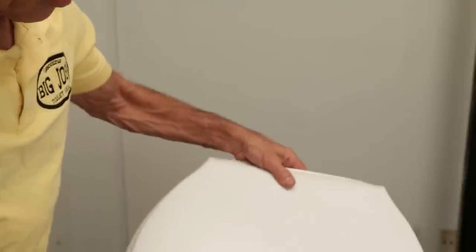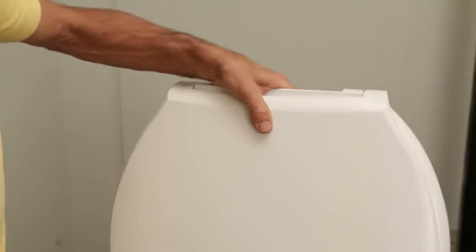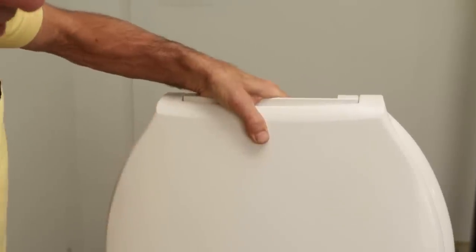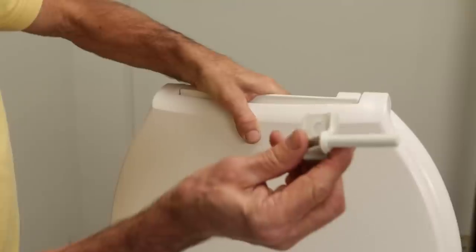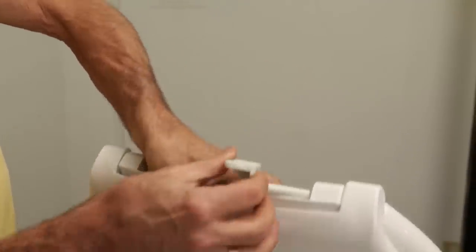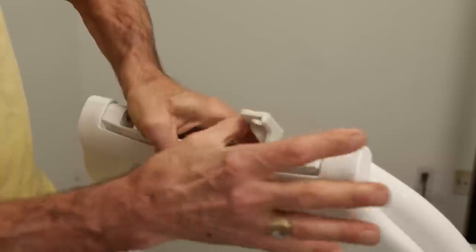Take the Big John toilet seat. Now the right side is as you're looking at the toilet. That would be the right and the left. Take the right hinge marked right and put it through the seat into the lid.